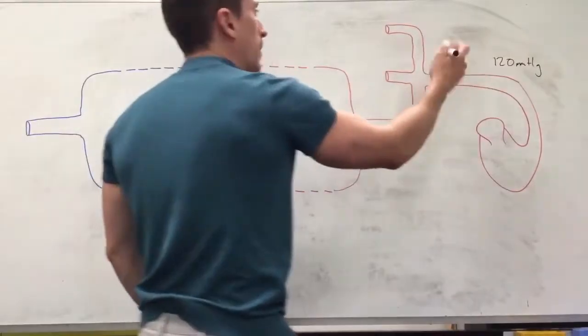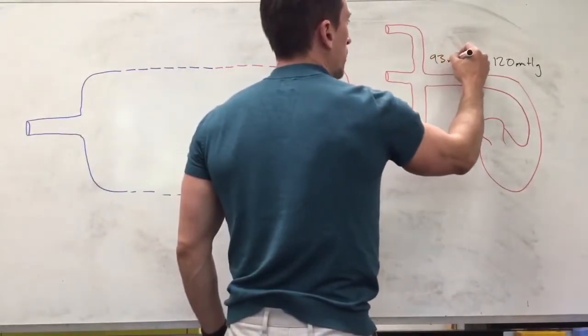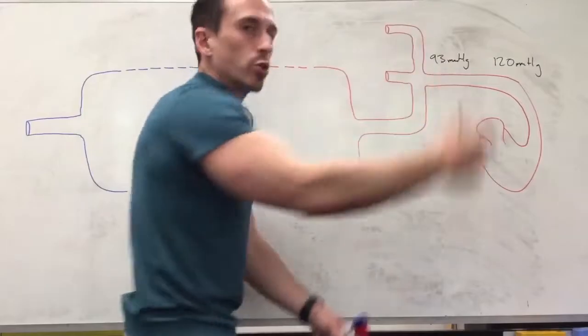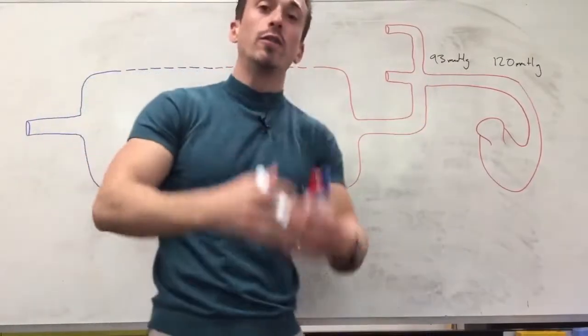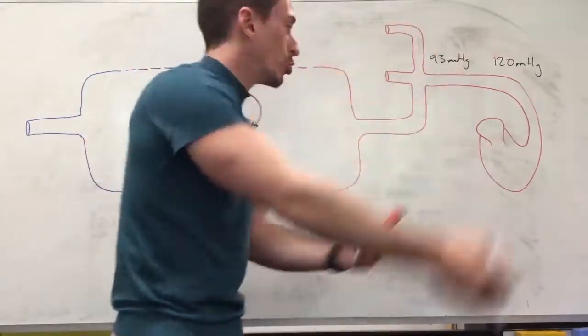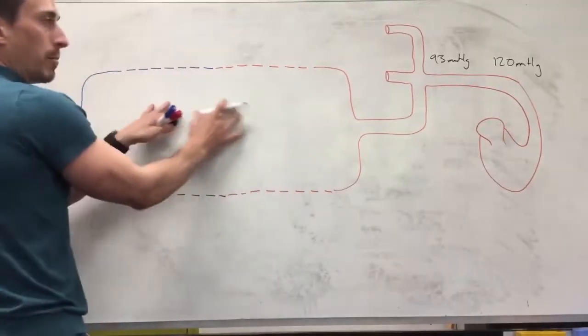As it goes through it ends up hitting around about 93 millimeters of mercury and as you can see as it branches through it starts to drop and drop just like a garden hose. The pressure drops until we hit the point of the capillary bed.